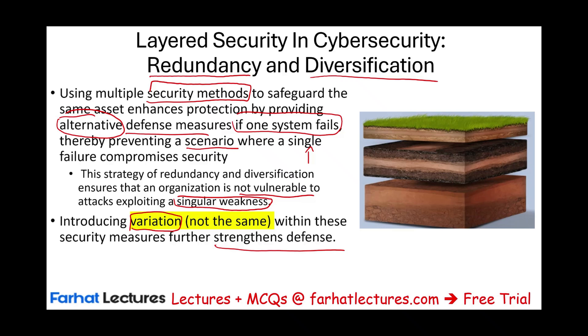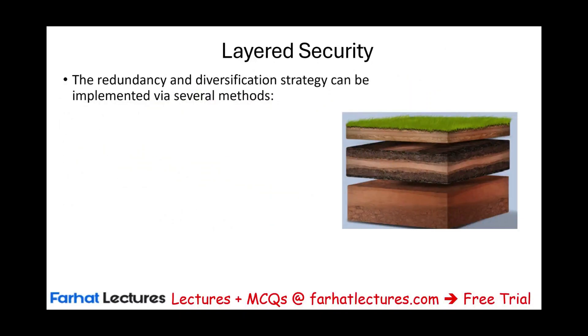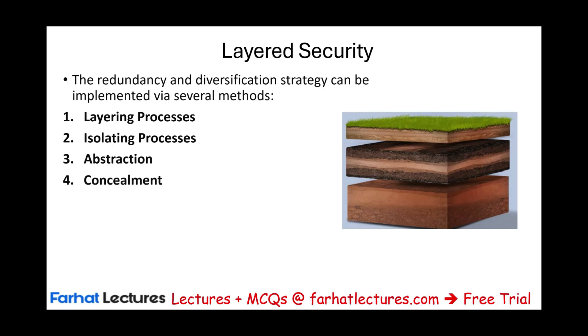Those various layers of security defenses — let's get started. The redundancy and diversification strategy can be implemented through various methods: a layering process, an isolating process, abstraction, concealment, data concealment, and segmenting hardware. We're going to look at each one separately, explaining what it is and giving an example, starting with the layering process.